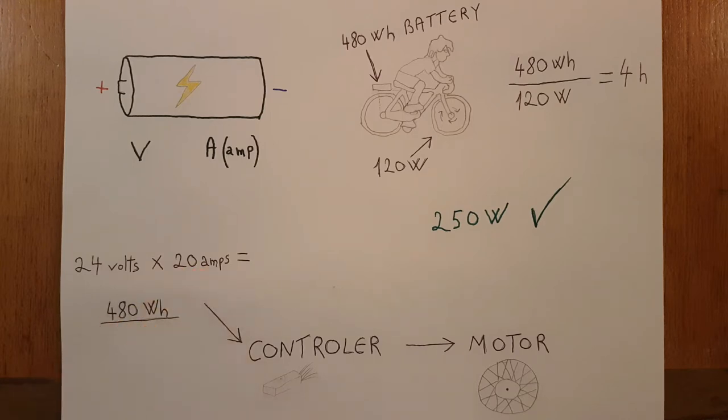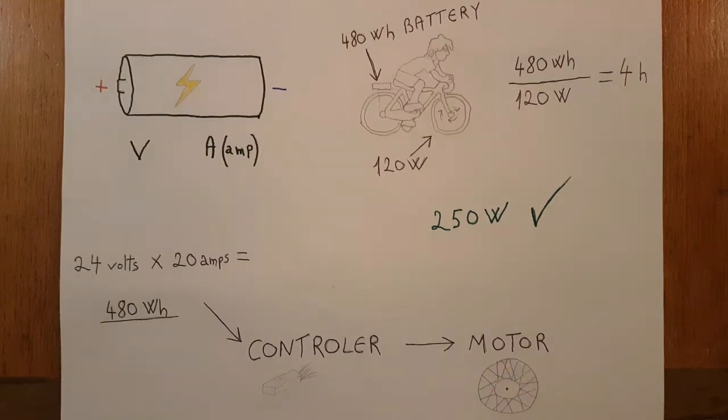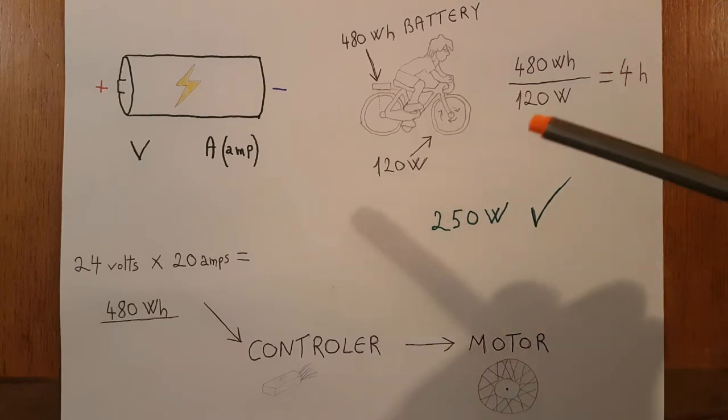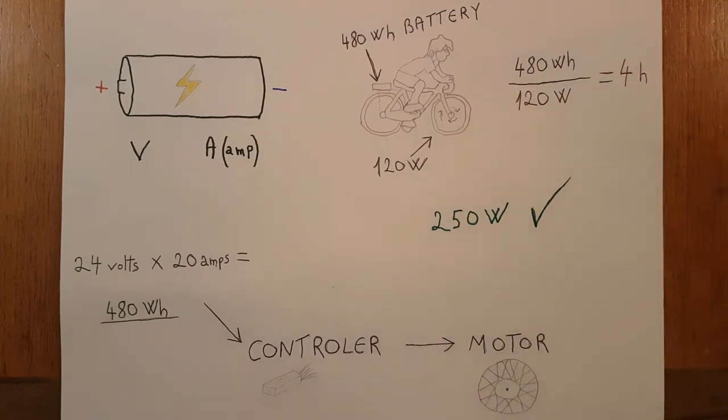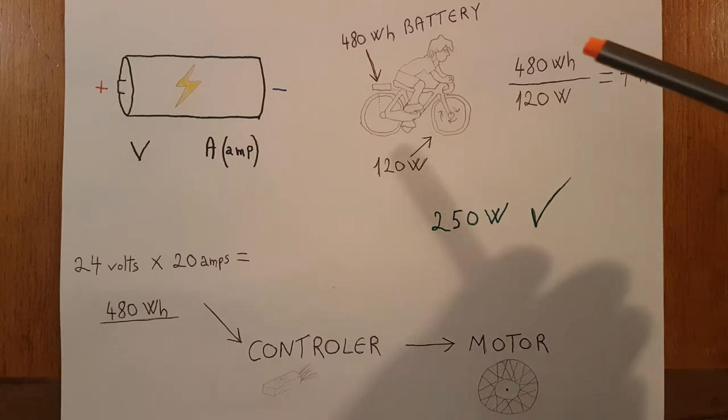Now this total amount of energy will be distributed gradually by the controller and you will get a range accordingly. So if you use constantly 120 watts per trip, your battery will last 4 hours per full charge: 480 divided by 120 equals 4 hours.